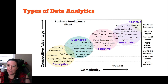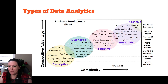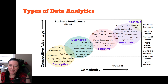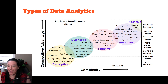When it comes to data analytics there are five areas: descriptive, diagnostic, predictive, prescriptive, and the newest one is cognitive. Let's go in the order of complexity. The simplest, easiest is descriptive analytics. Descriptive and diagnostic analytics are describing the past, whereas predictive, prescriptive, and cognitive are about the future.